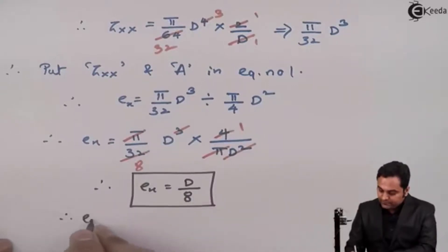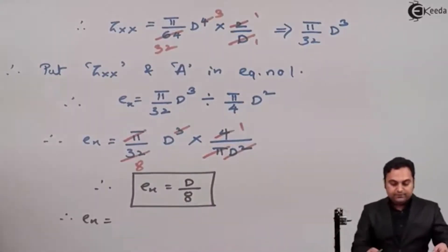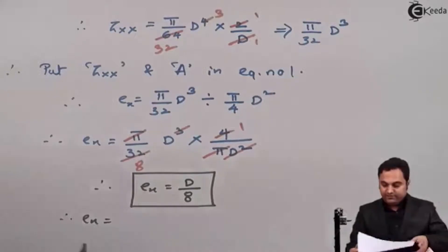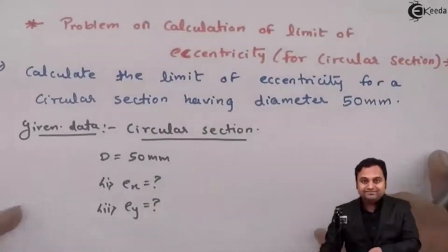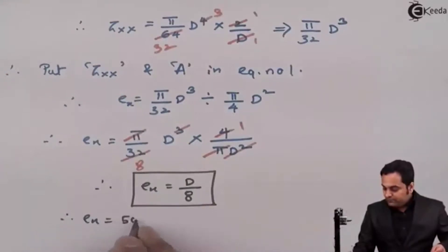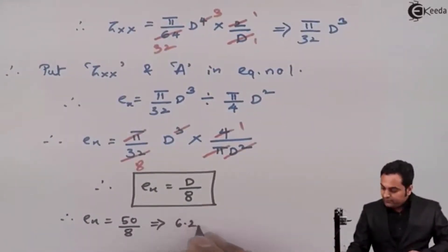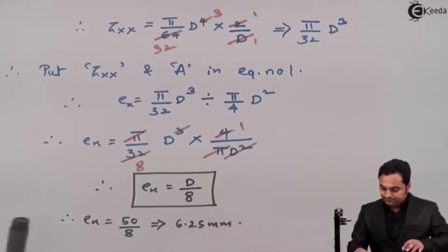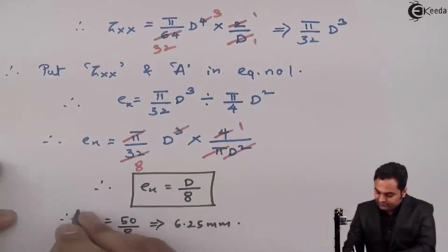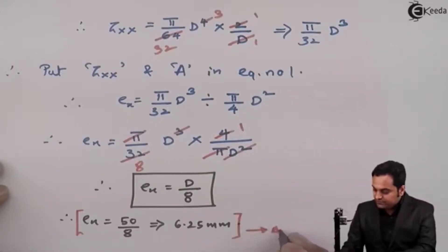And hence here in this problem the diameter was given as 50 mm as we see here. So 50 divided by 8, so this EX comes out to be 6.25 mm.